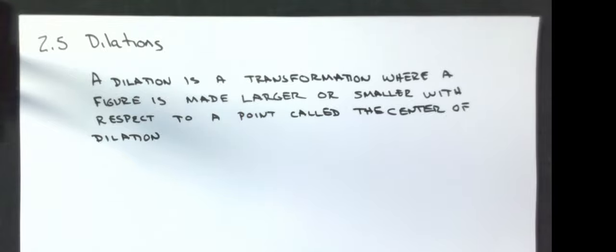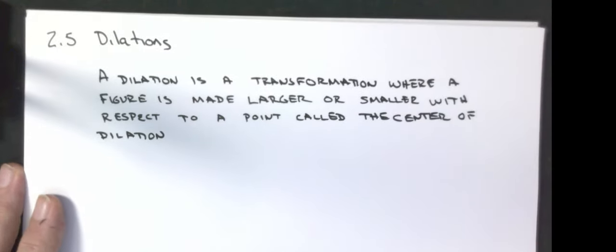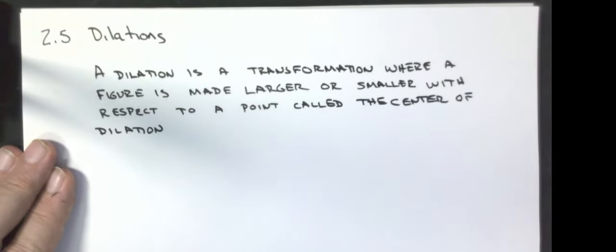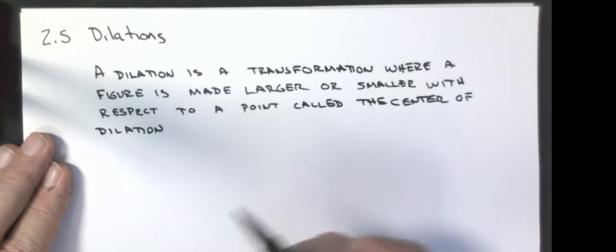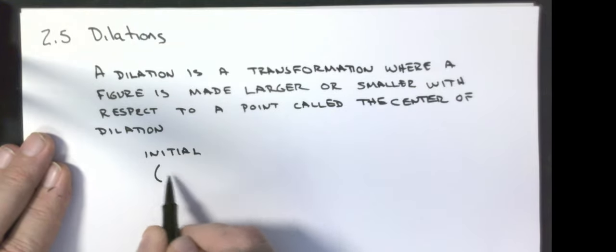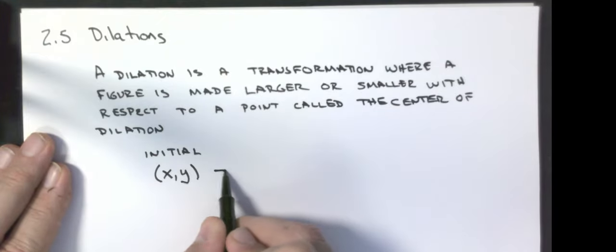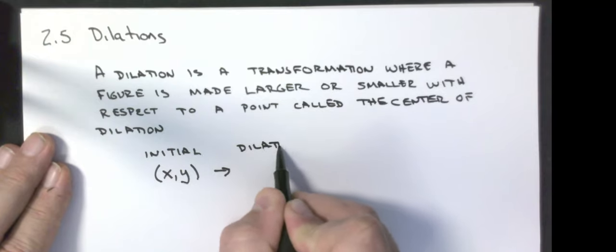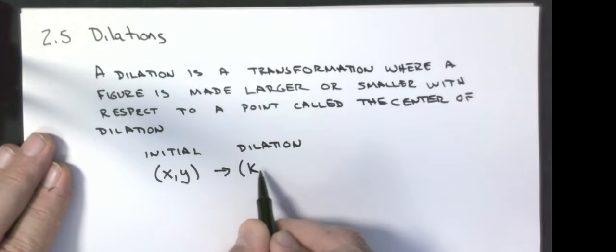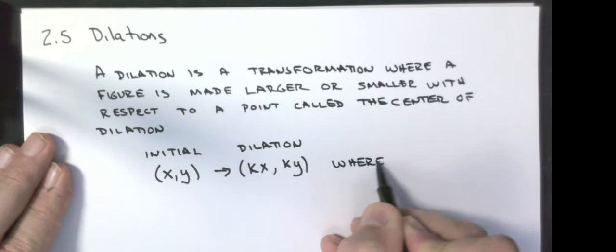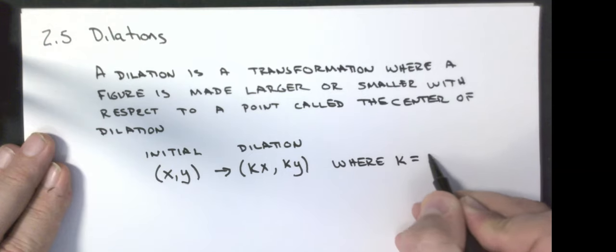This year you're going to concentrate on cases where your center of dilation is the origin. If you have an initial point at (x, y), after a dilation it's going to end up at (kx, ky), where k is equal to the scale factor.